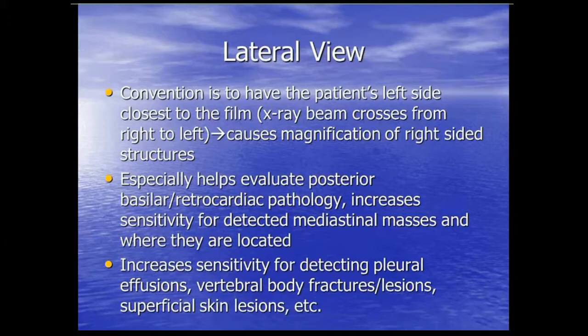For the lateral view, the convention is that the patient's left side is closest to the film or detector, so the left ribs are less magnified than the right — the bigger ribs on the lateral are the right ribs. The lateral view is really important and helps find things like retrocardiac pneumonias, especially behind the left heart. It's also very sensitive for pleural effusions and vertebral body fractures and lesions that are often missed on frontal views alone.